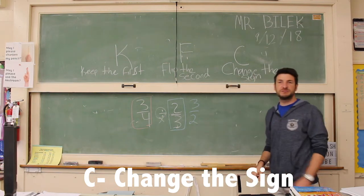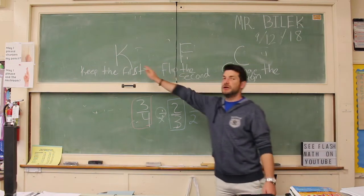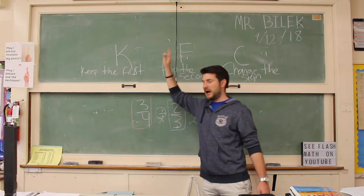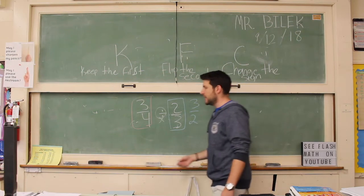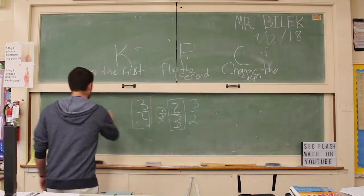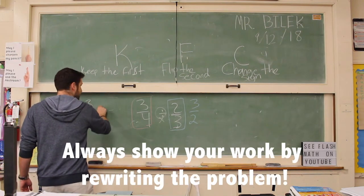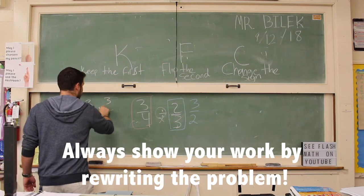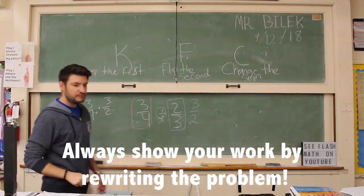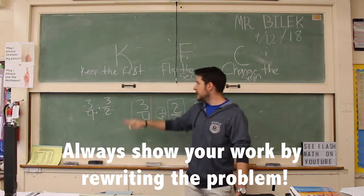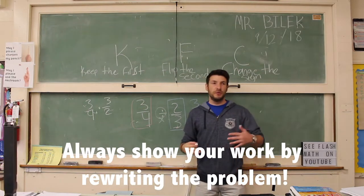Let's rewrite this problem with all of our ingredients of KFC. Rewriting this problem, we're going to get three-fourths times three over two. Now it becomes a multiplication problem that we can solve.